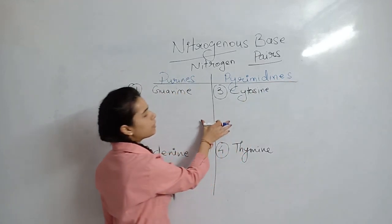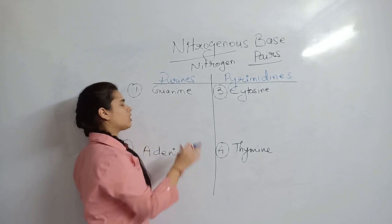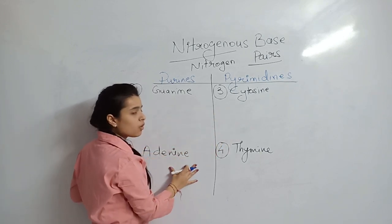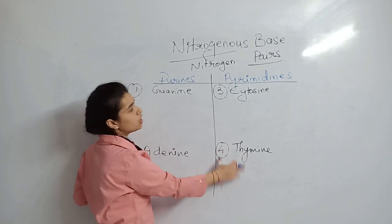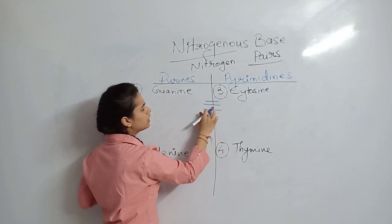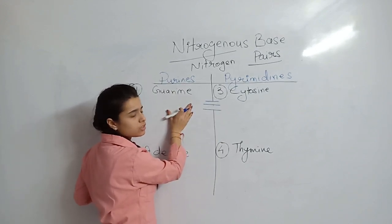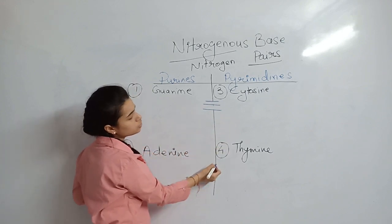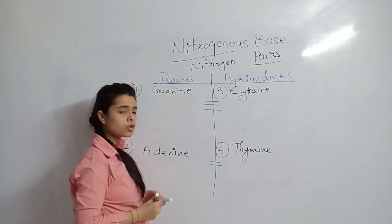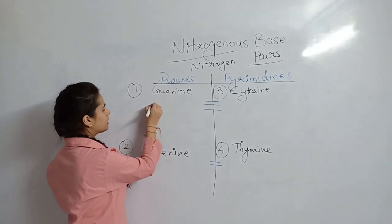Purines bind with pyrimidines. Specifically, guanine only binds with cytosine and adenine only binds with thymine. The bond between them is a hydrogen bond. There are three hydrogen bonds between guanine and cytosine, and two hydrogen bonds between adenine and thymine. Let's now look at the structures to understand why.